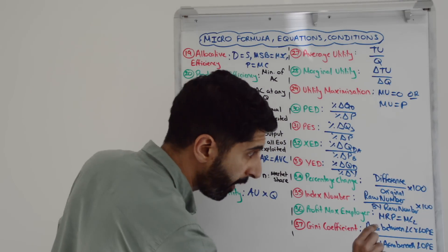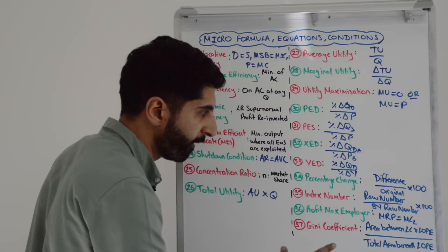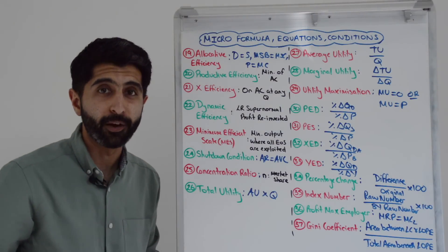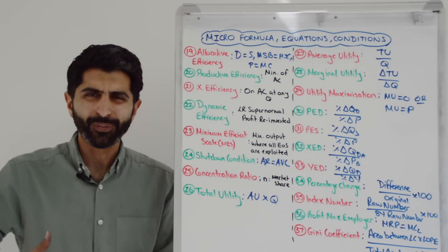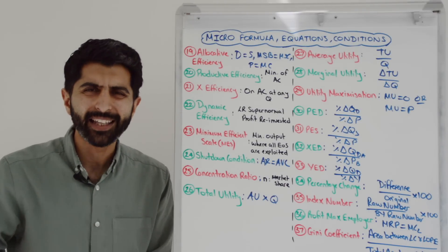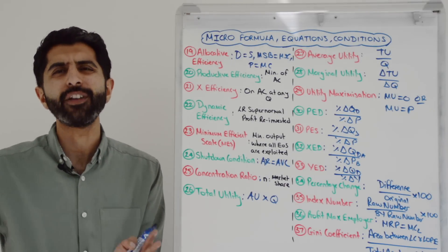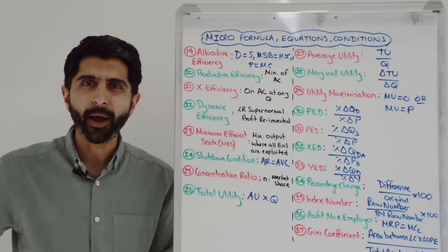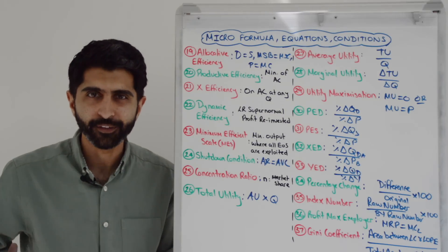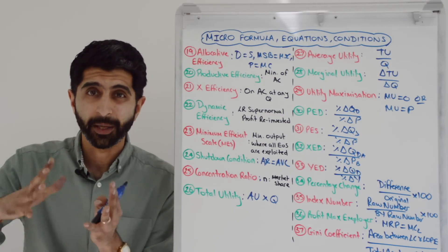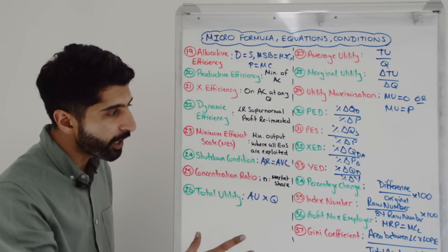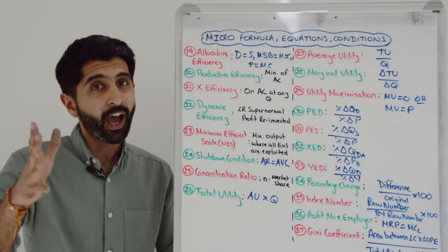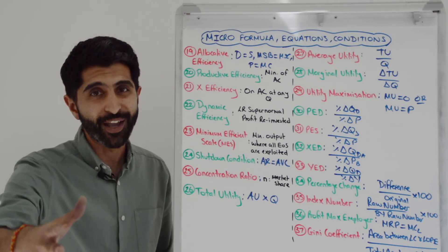So LOPE — the line of perfect equality — and LC — the Lorenz curve. Much better to learn it that way than just with letters. So that's it — all the formulas, the key equations, key conditions for everything in the micro course. Hopefully you've taken that all in and you're going to ace your micro exams. Thank you so much for watching. Make sure you watch my macro video where I've done exactly the same thing for the macro course, and I can't wait to see you in future videos.